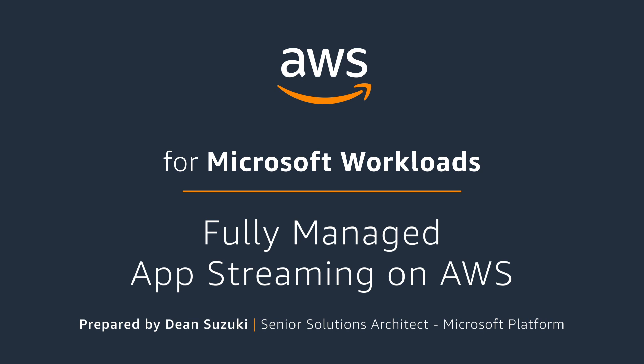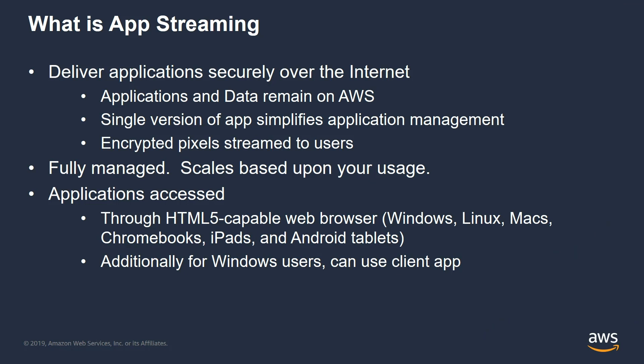The first question people may have is: what is application streaming? Application streaming is the ability to deliver applications securely over the Internet. The nice thing is that the application and the data remains on the back-end servers, hosted on AWS. So your users basically get the encrypted stream of pixels streamed down to their desktop.